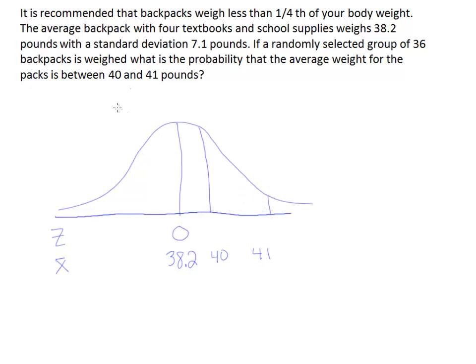So we're looking for the probability that the average of this group of backpacks ends up being between these two weights. And so now, really, all that's left to do is convert these into z-scores. To do that, we're going to need a standard deviation, but it's the standard deviation for x-bar that we need. So don't forget that that's the original standard deviation of 7.1 divided by the square root of the sample size, in this case, the square root of 36.